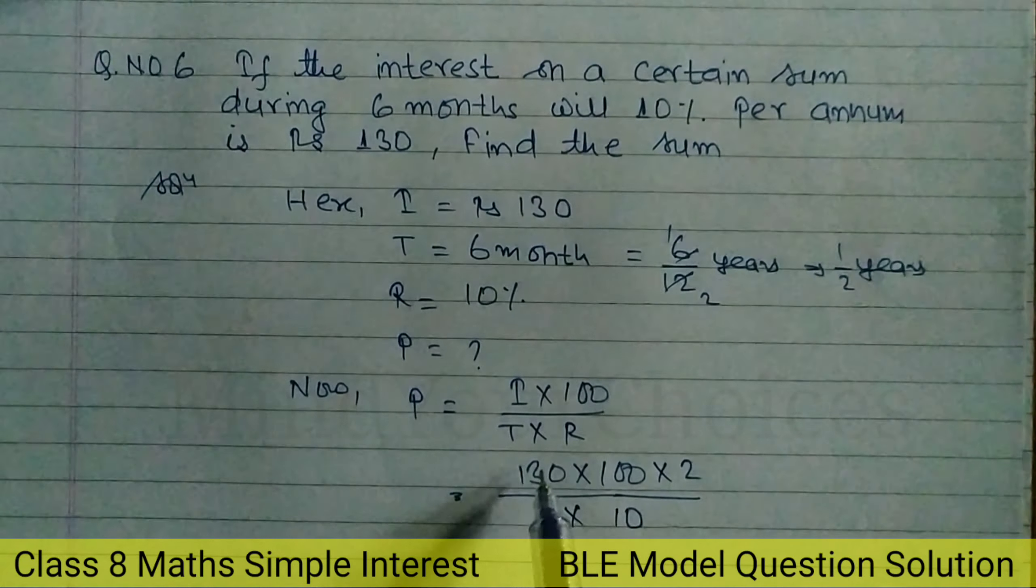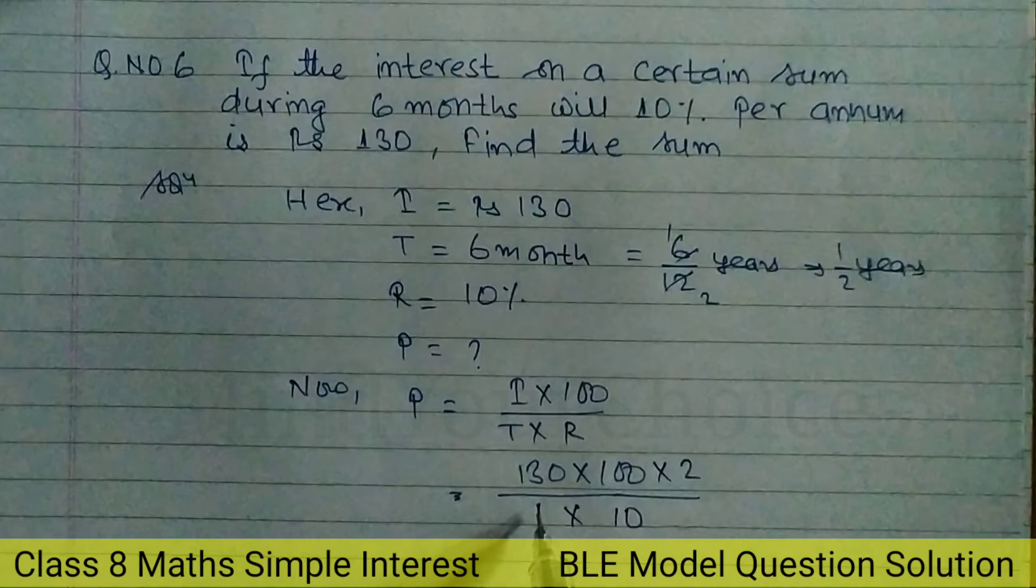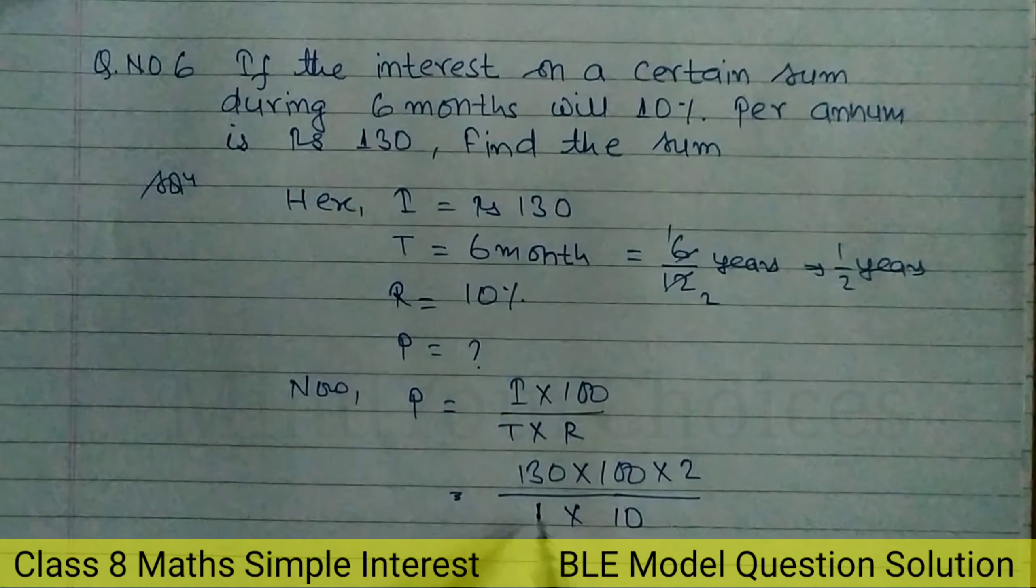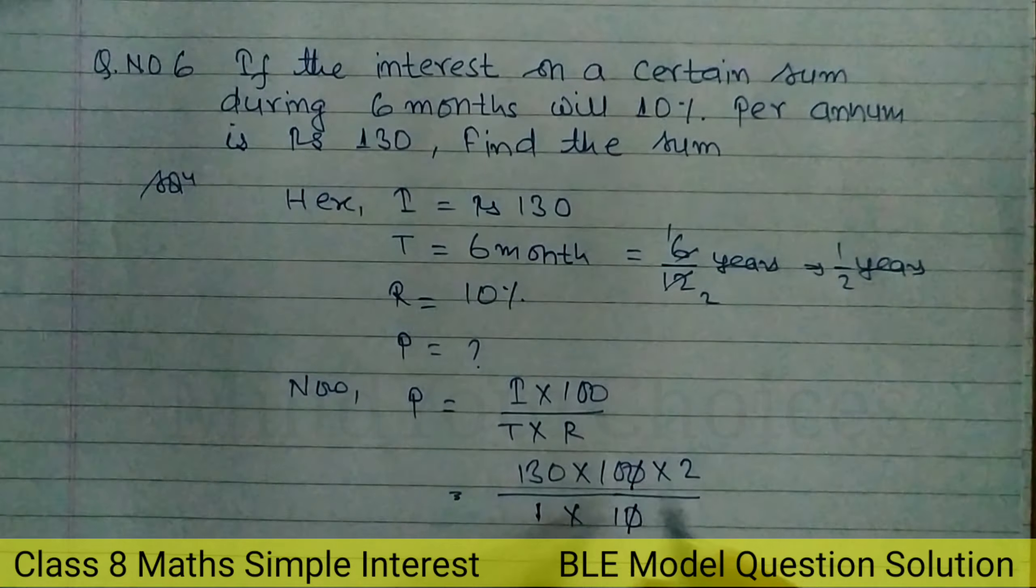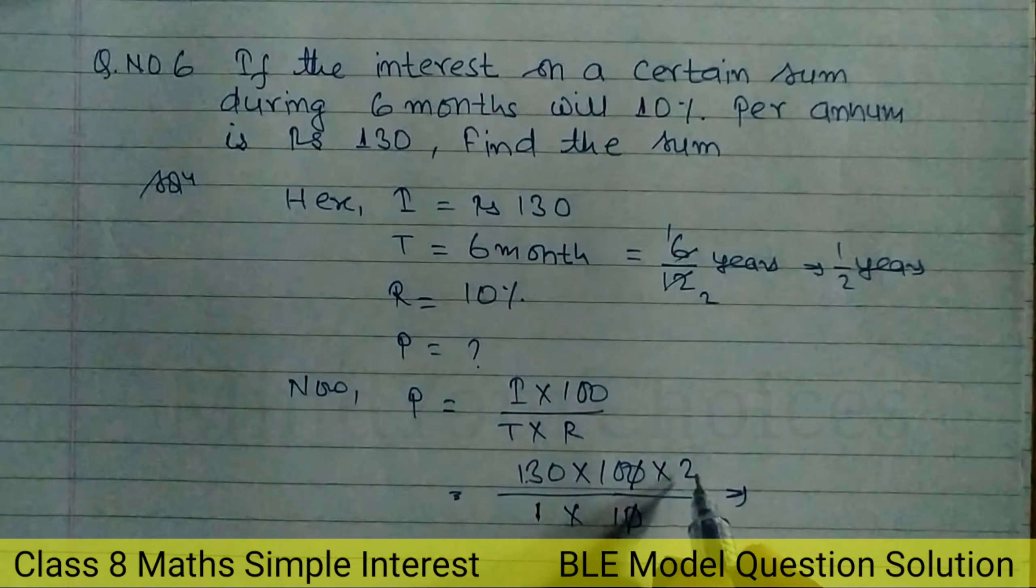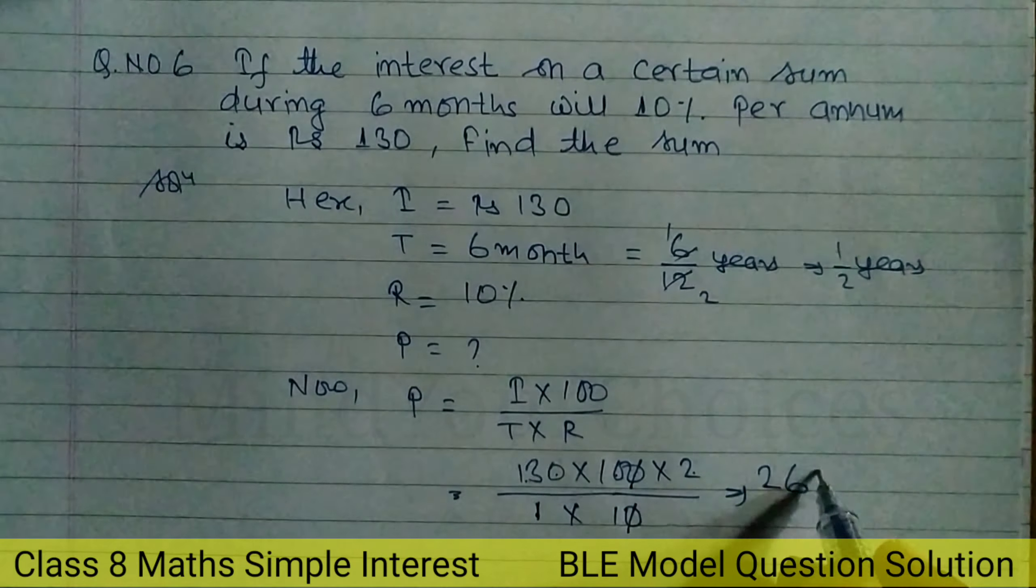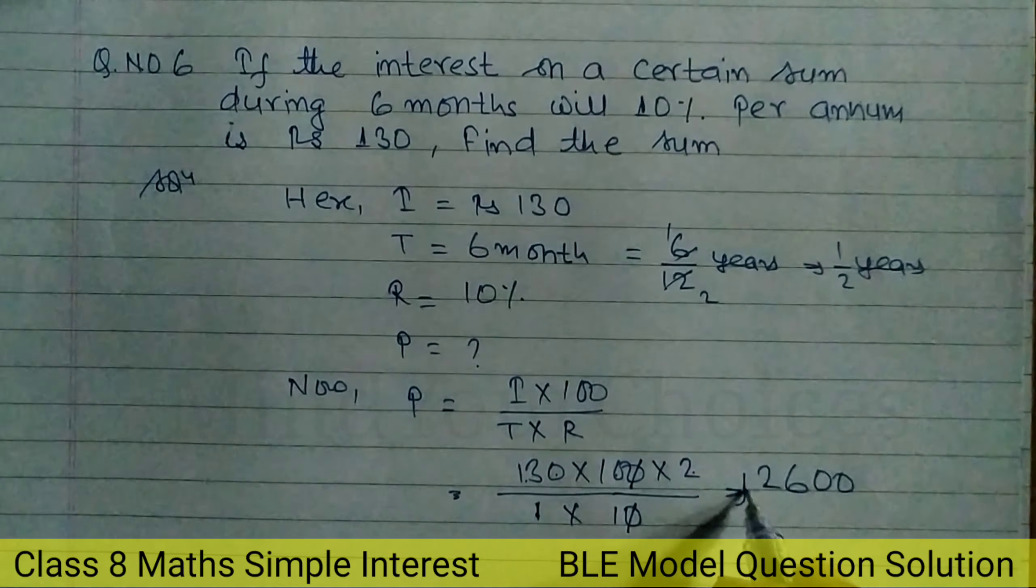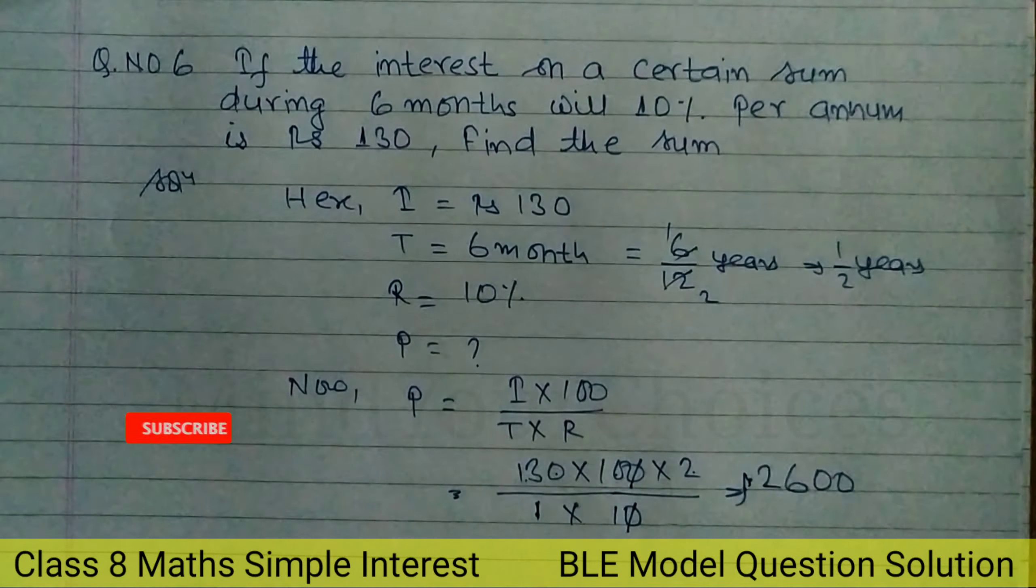If you have 1 by 2, you multiply by 2. Calculating this out, the principal is 2600. The answer is 2600.